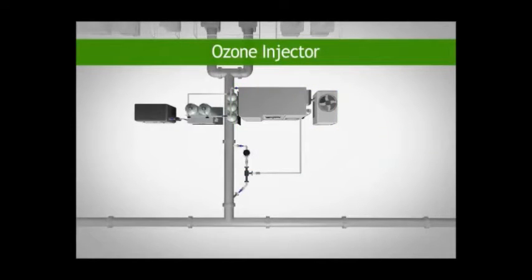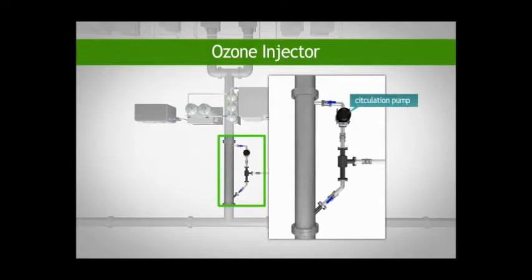The third component is the sidestream ozone injector, which includes a circulation pump, the injector itself, and the jet nozzle.